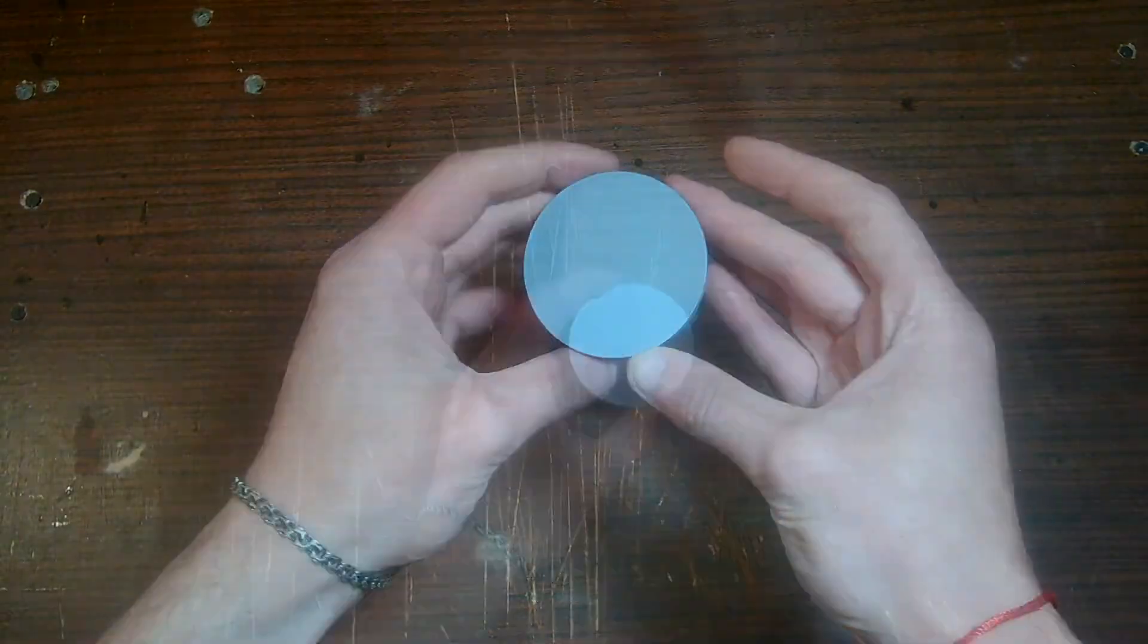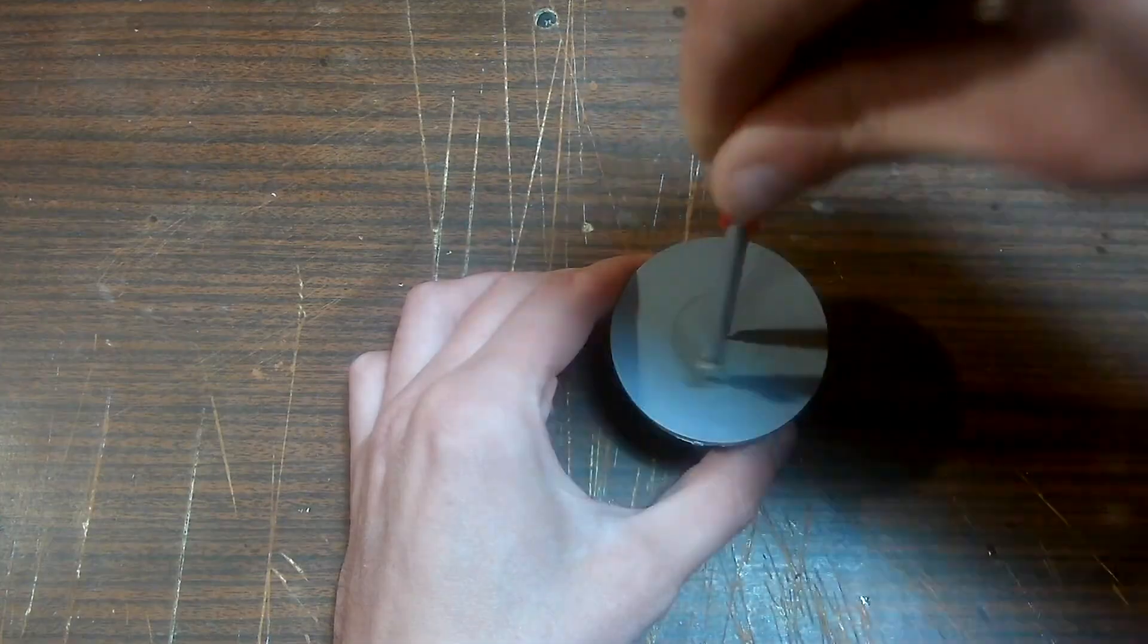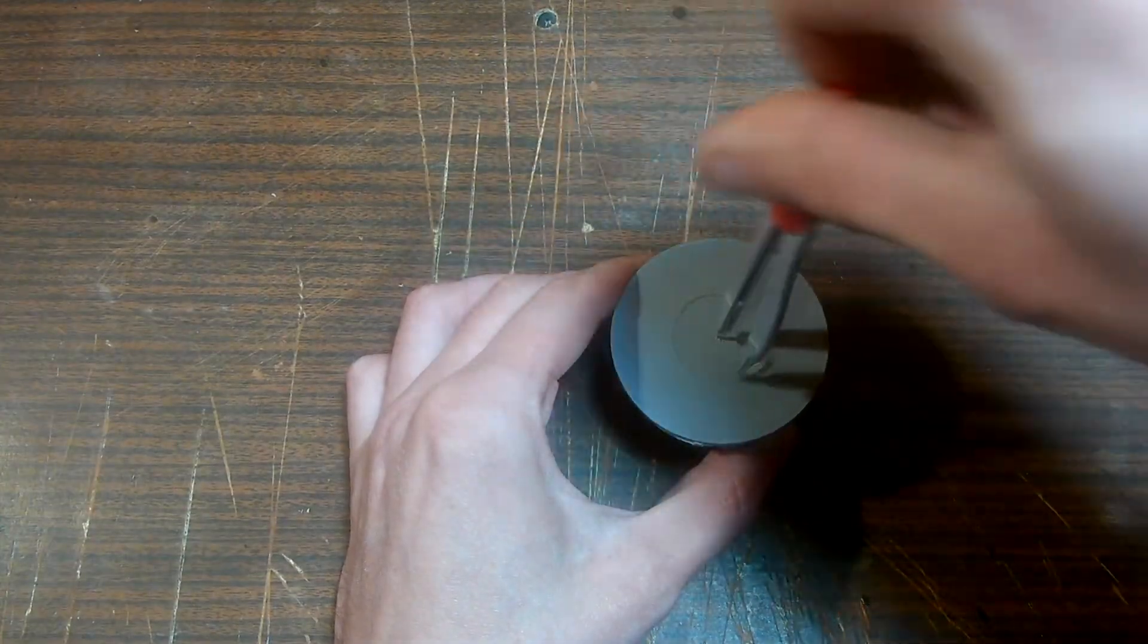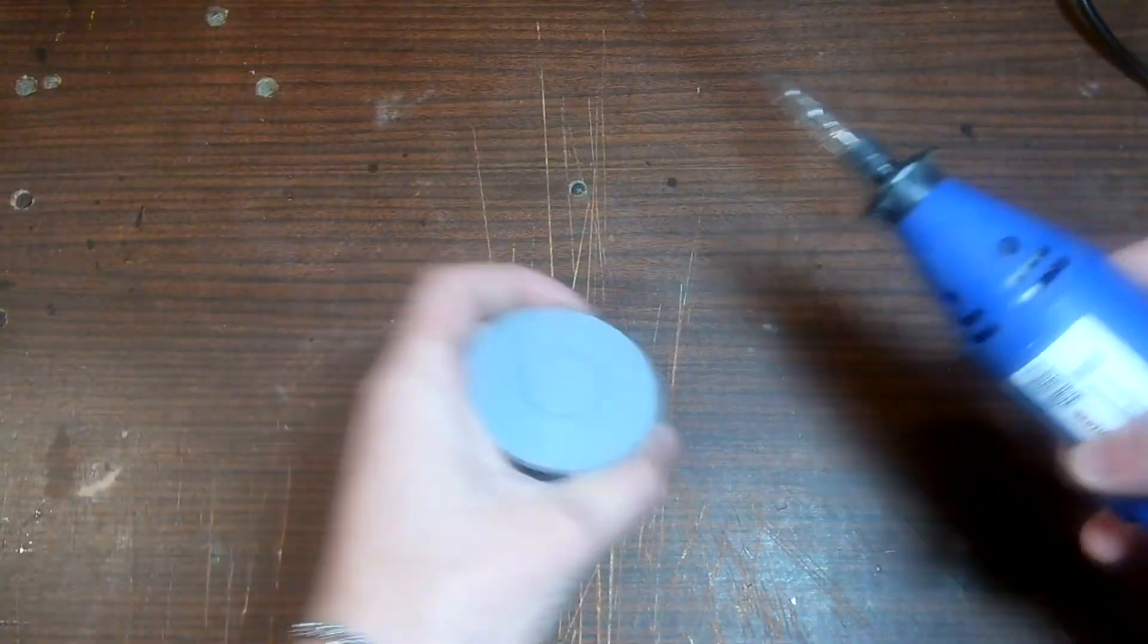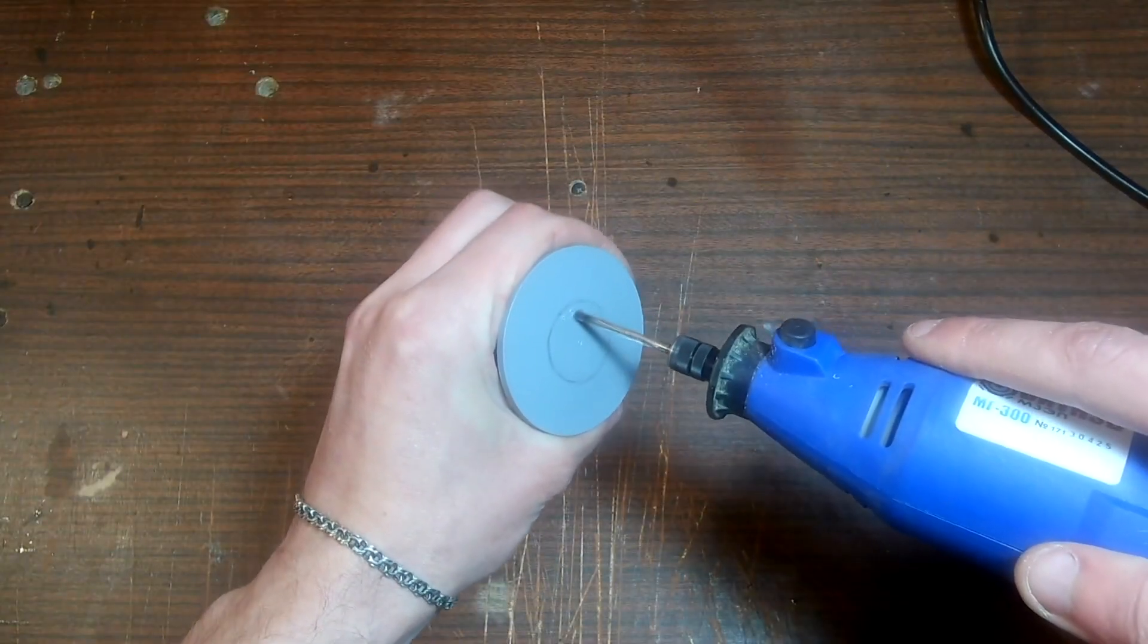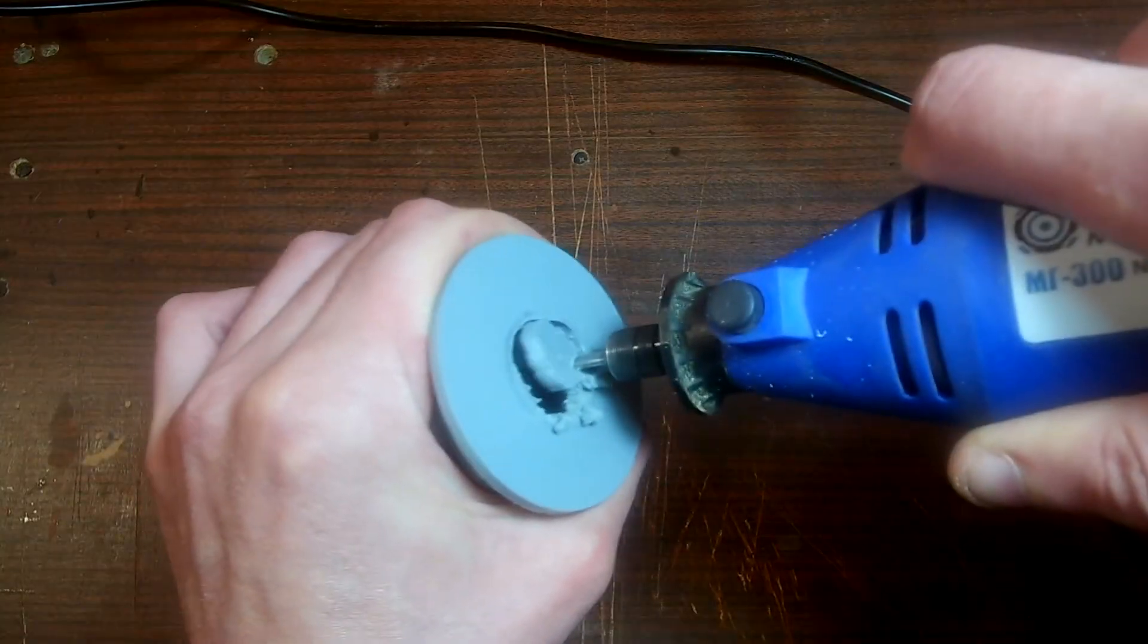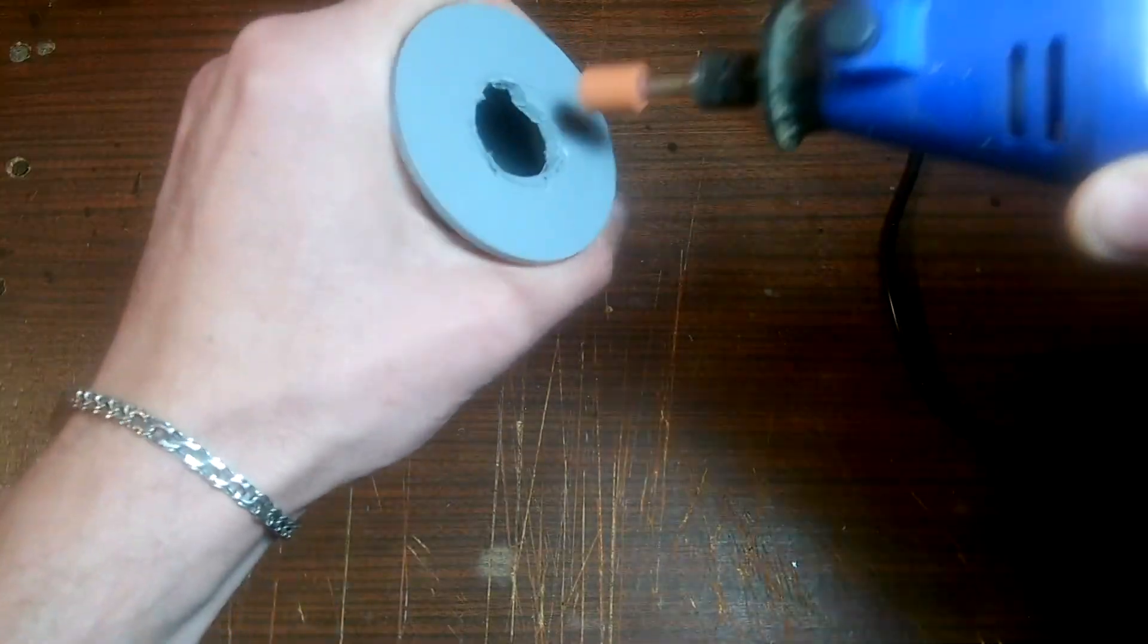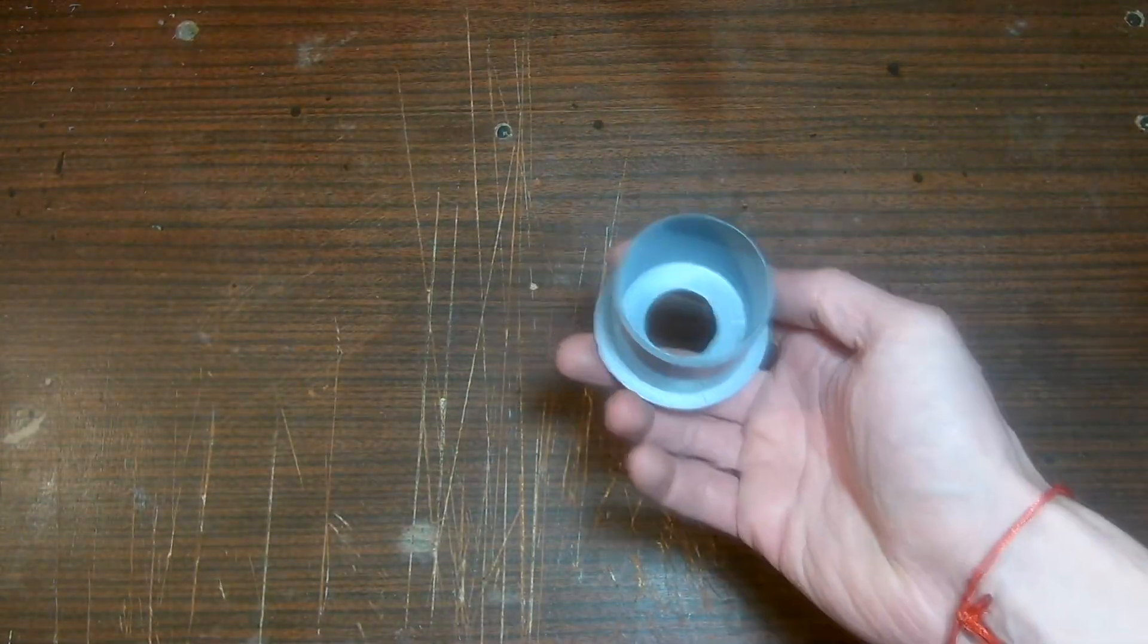Now let's take a cap for a 50mm sewer pipe and make a hole in it with a diameter of 25mm. We need two of these caps.